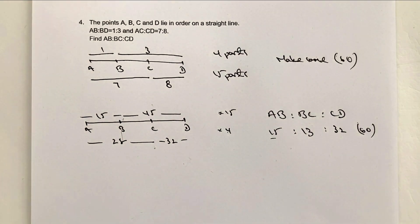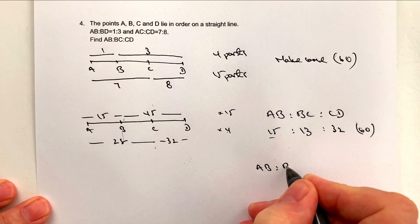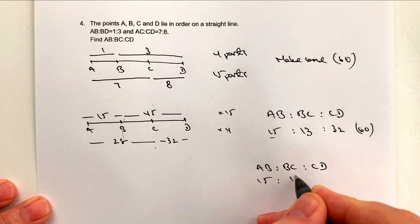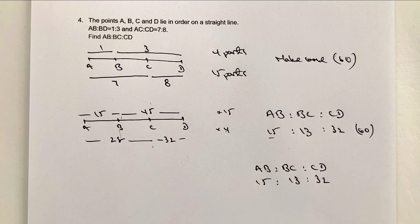So hopefully that's okay for you that AB to BC to CD is 15 to 13 to 32. If you're not sure about any of that, please do add a comment below. I'll always come back to you. I hope you found the videos useful and I look forward to seeing you inside the next video.